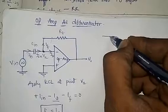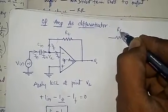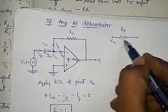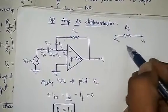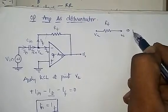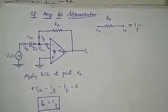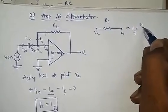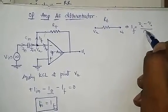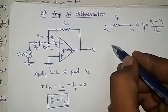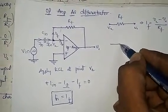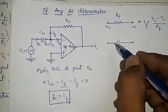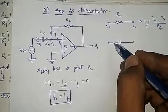For the feedback resistor: this is the feedback resistor, VA is one end and V0 is the other end. The current I_F across this feedback resistor is equal to (VA minus V0) divided by R_F.